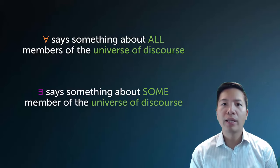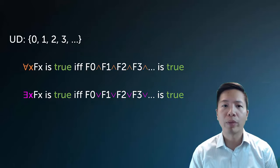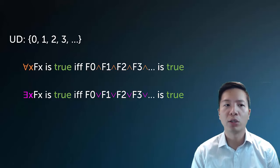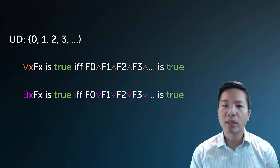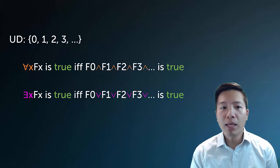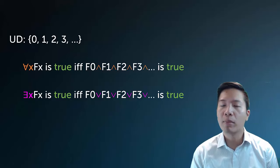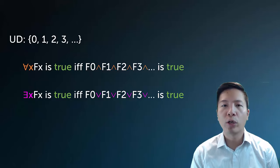The universal actually says something about all members of the universe of discourse — that makes sense, it says 'for all.' And the existential says for some or for at least one member of the universe of discourse, some property holds. And so if we have a universe of discourse that's extensionally stipulated, for example my UD is {0, 1, 2, 3, ...}, I can actually break this down. So if I have a statement that's universal, like 'for all X, FX', what that really means is that F0 and F1 and F2 and F3 and so on must all be true. A universal just means a bunch of ANDs that range over everything in my universe.